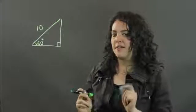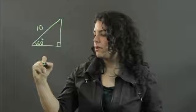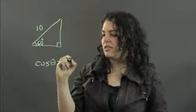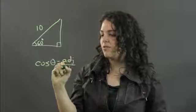The cosine of any angle, cosine of any angle theta, can be found as the adjacent over the hypotenuse.